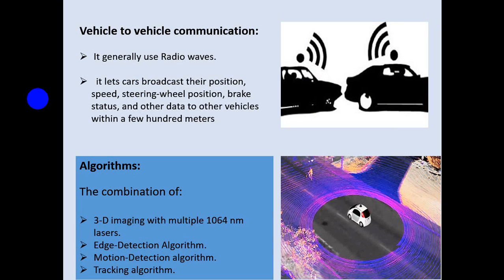Algorithm. The whole system of the driverless vehicle is similar to a computer system where we give some inputs, there is a CPU that analyzes the data, and it gives the output. Similarly, here we have algorithms which analyze the inputs. The combination of 3D imaging with multiple 1064 nm lasers, heat detection algorithm, motion detection algorithm, tracking algorithm, and more are used.